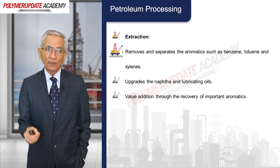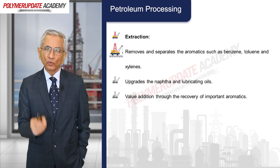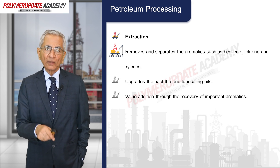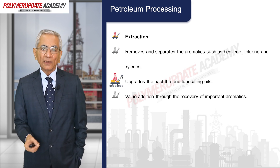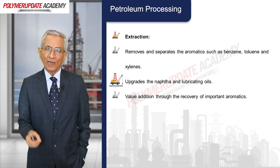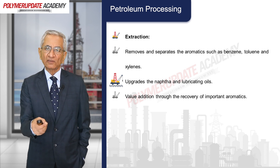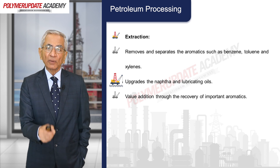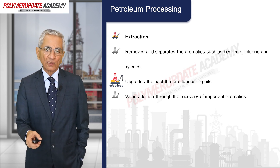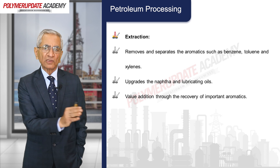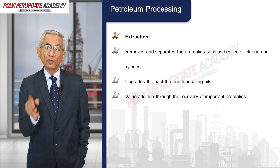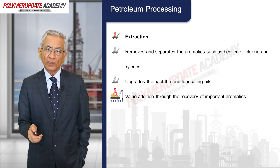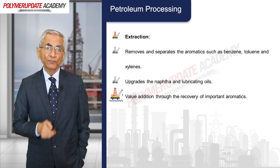Extraction uses a solvent to remove materials like benzene, toluene, and xylene, which are of much higher end value. The remaining part is used as fuel. Upgrading naphtha and lubricating oil is possible with extraction by removing aromatics like benzene and toluene. Extraction is a physical process, and value addition is achieved through recovery of important aromatics.